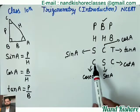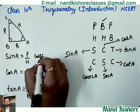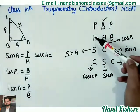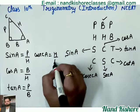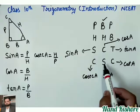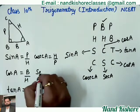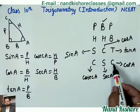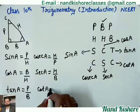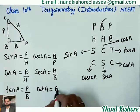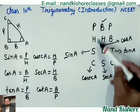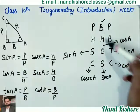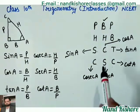Now look at the bottom ones. Cosecant A — since sine was P upon H, cosecant will be H upon P. It is the reciprocal of sine. Secant A will be H upon B, which is the reciprocal of cos. And cotangent will be B upon P, the reciprocal of tangent. See how easy it is to learn from this pattern.